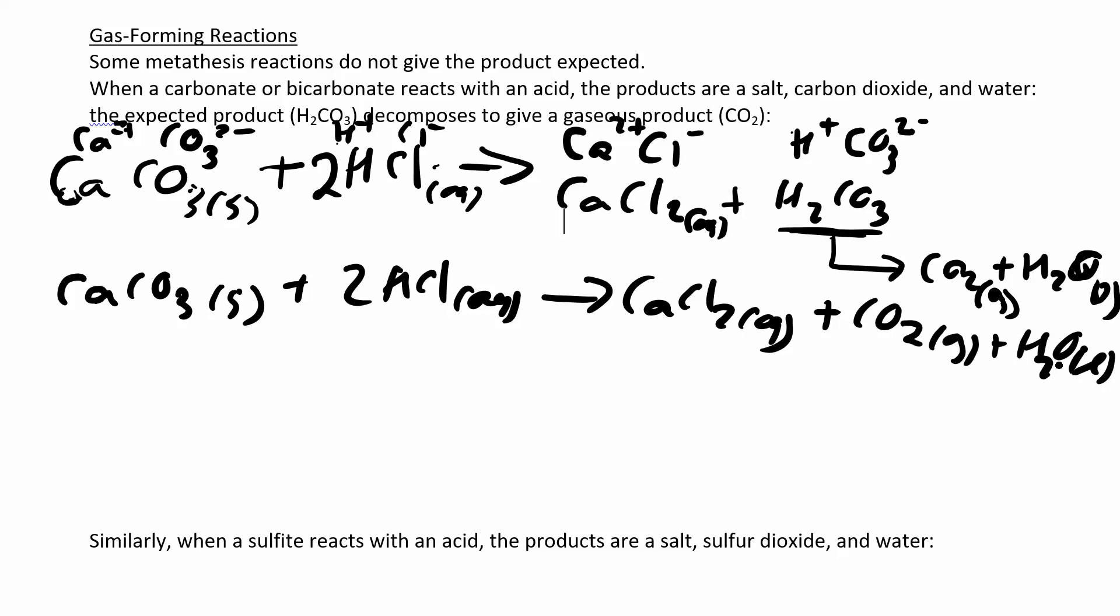If you wanted to write the net ionic equation for this, you know, the solid stays together. This guy is a strong acid. It's a strong electrolyte that will dissociate. This is a soluble ionic compound. So that's a strong electrolyte. That'll dissociate. Gases stay together, liquids stay together, solids stay together. So not much really breaks down here.